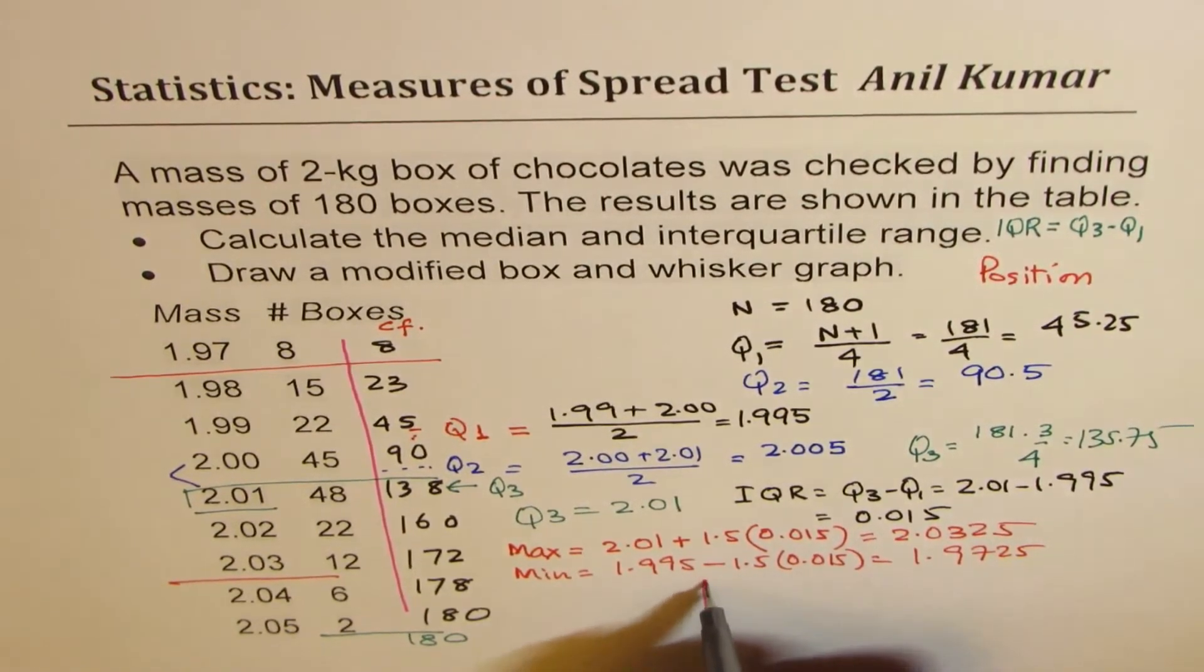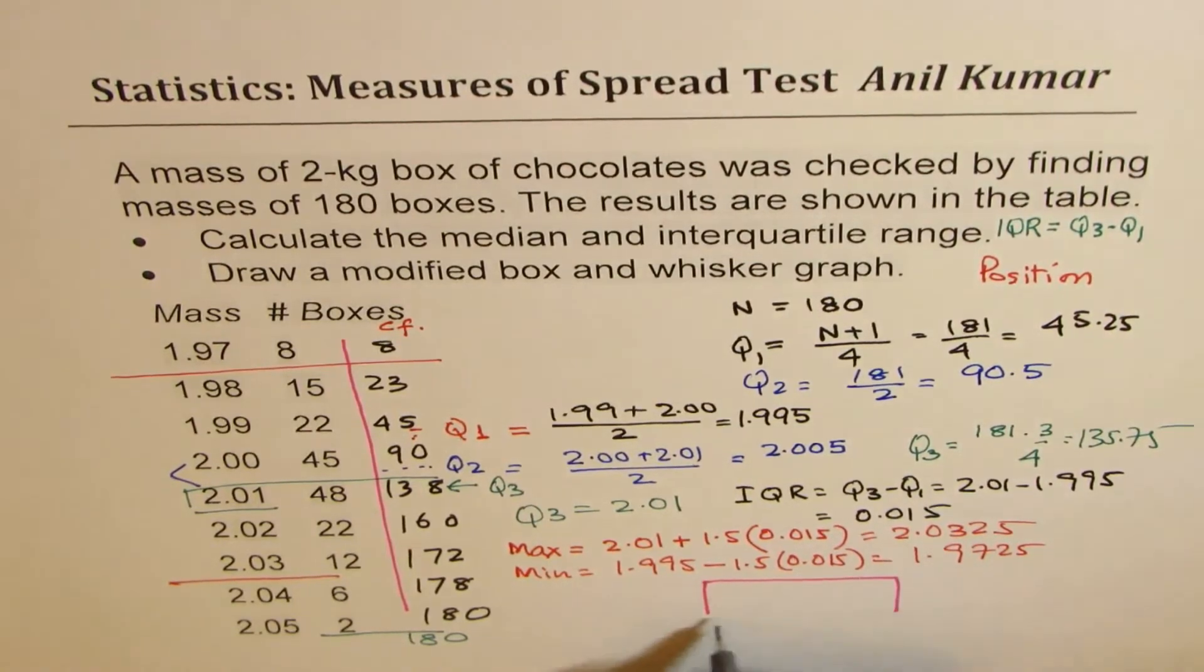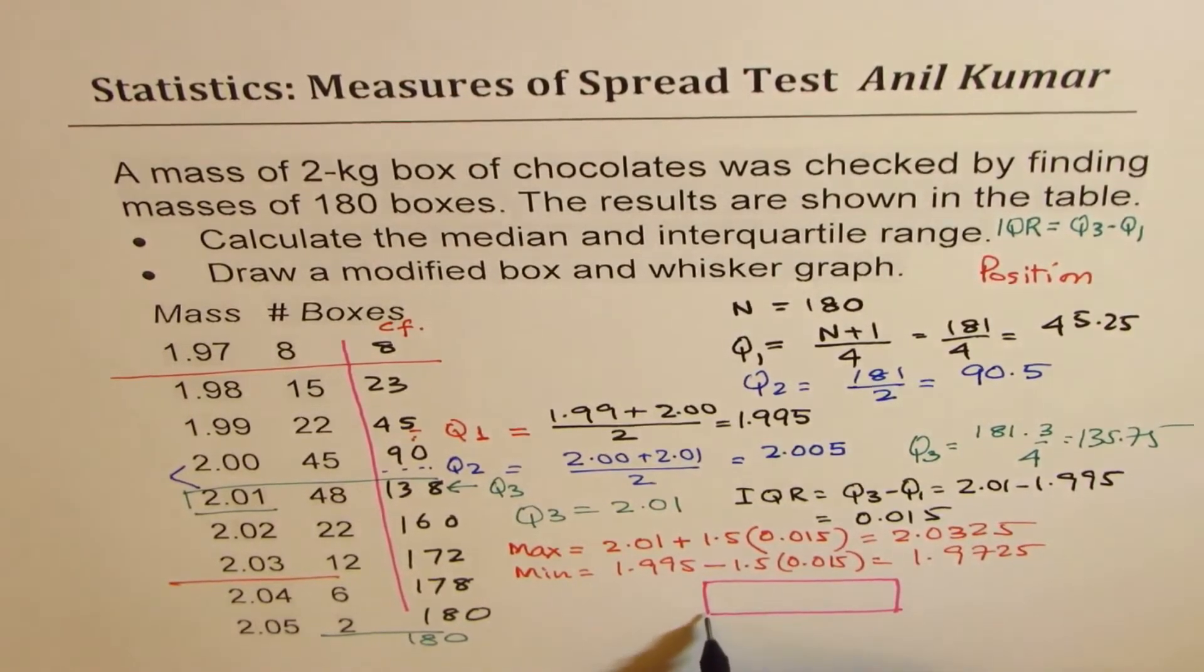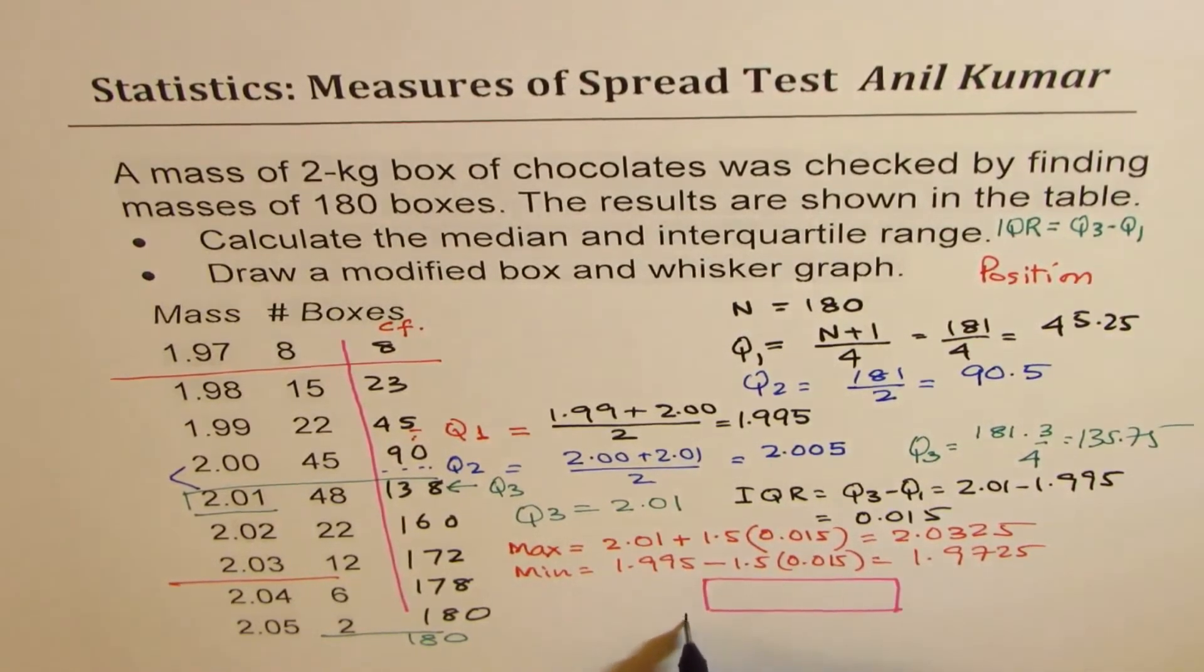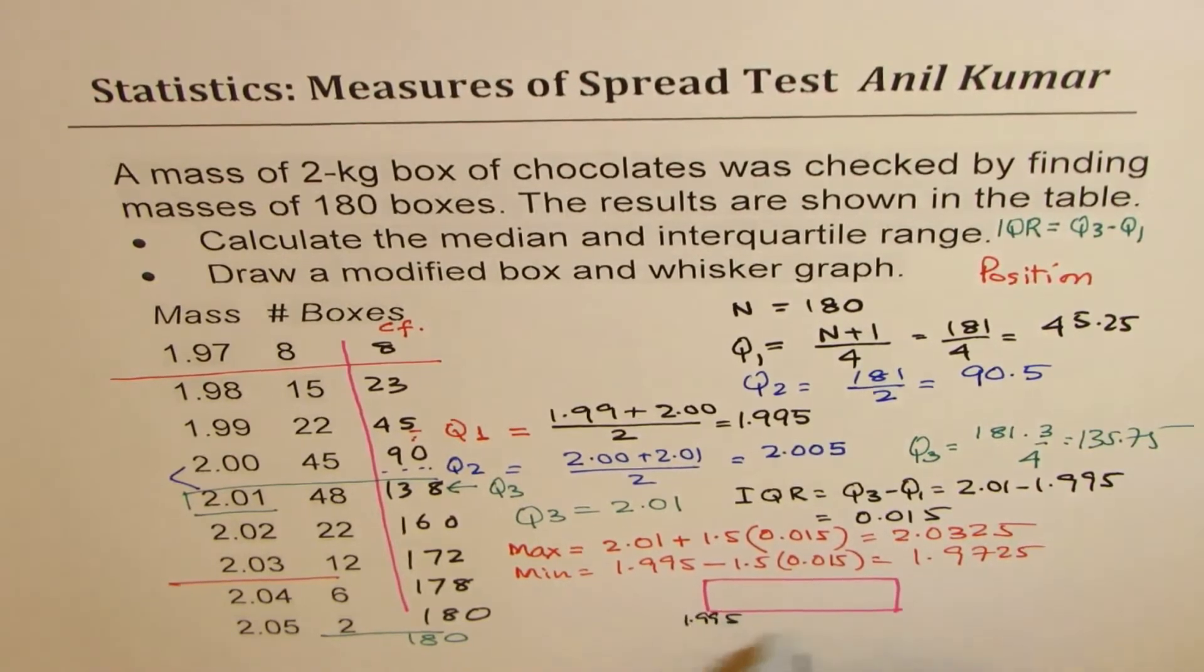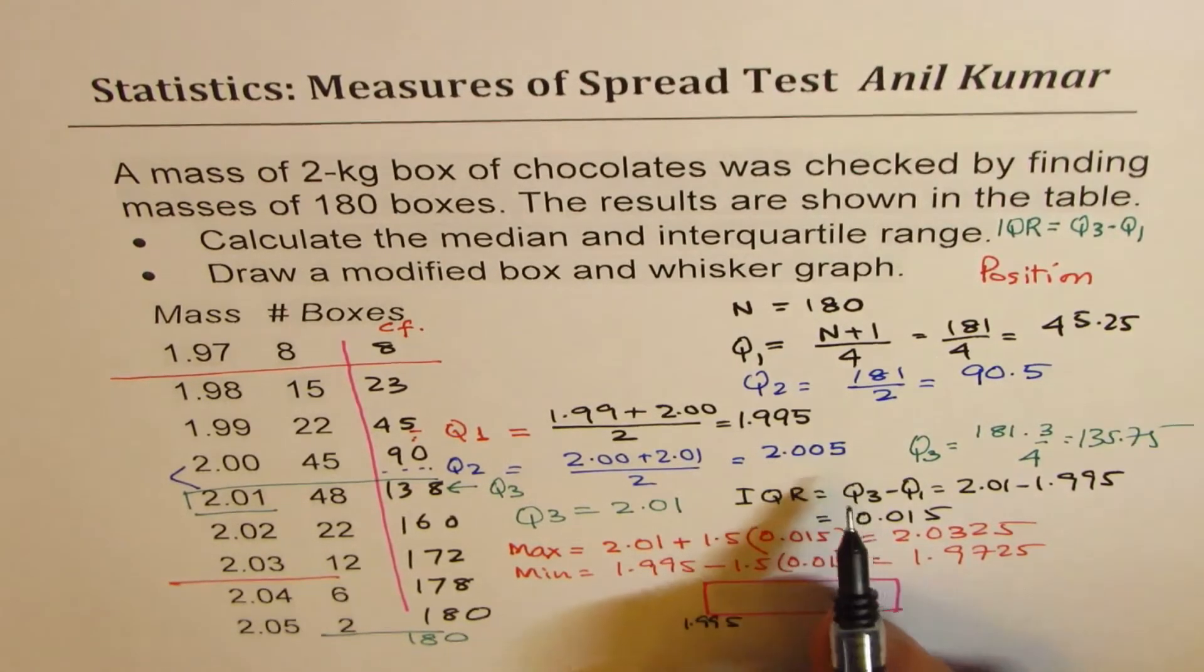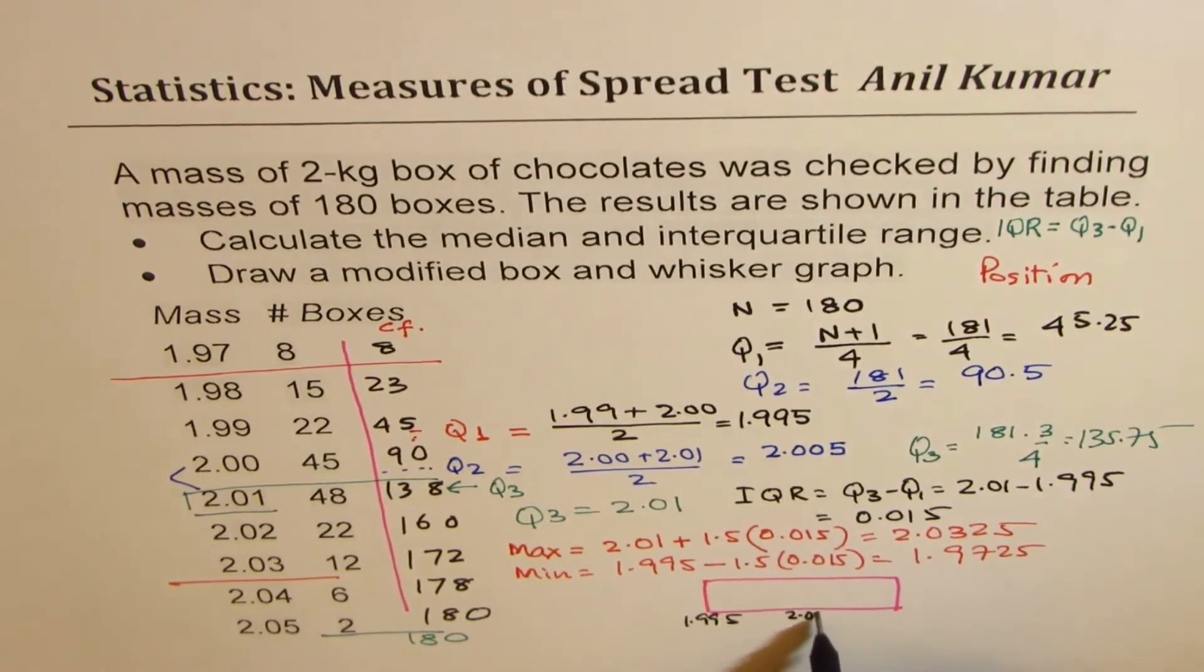So I am not sketching it to the scale, I am just making it clear for you. So we have this where Q1 is this end, which is 1.995. Q2 is somewhere in between, which is 2.005.